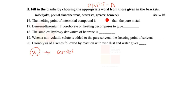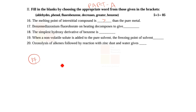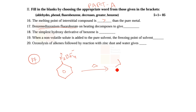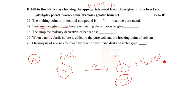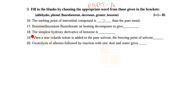Greater than the pure metal. 17th question: benzene diazonium fluoroborate on heating decomposes to give N2 and BF4 minus. When we heat it, we will get fluorobenzene plus N2 plus BF3. So the 17th answer is fluorobenzene. Next, question number 18: the simplest hydroxy derivative of benzene is?